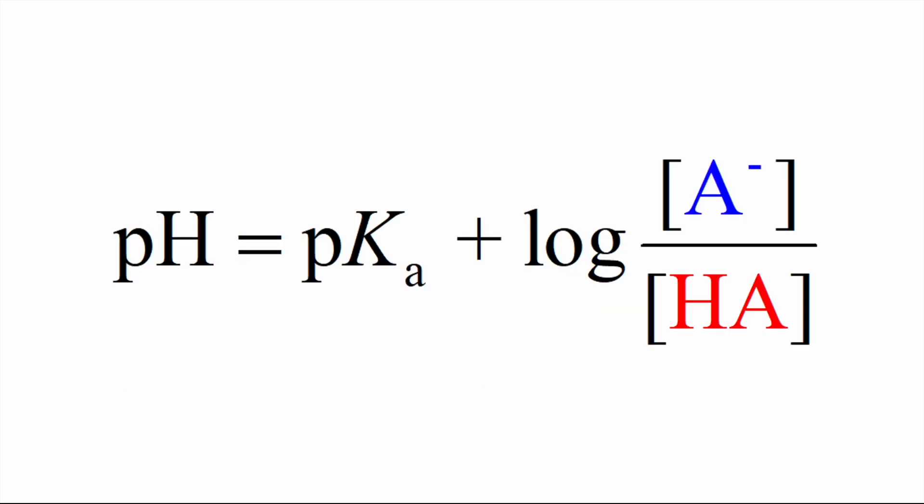Now let's apply what we just learned to the Henderson-Hasselbalch equation. The Henderson-Hasselbalch equation is a formula used to understand the pH of a buffer solution based on the concentrations of acid and conjugate base. How do you know you have a buffer? You have both the weak acid and conjugate base in the solution — the A- and the HA.